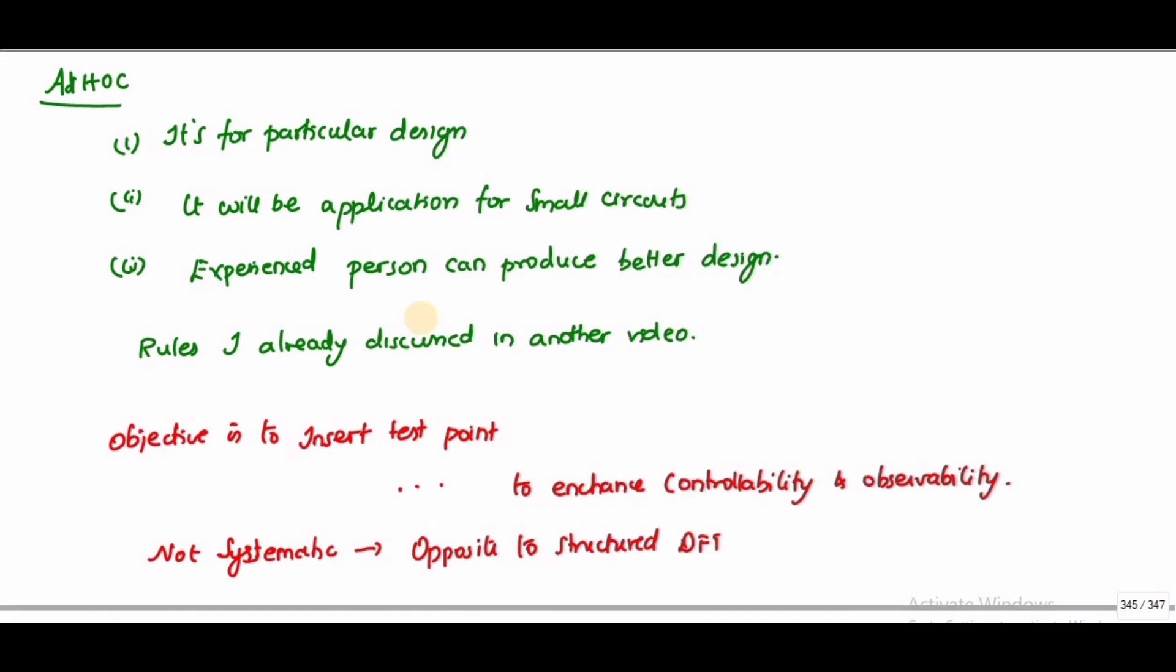If one test vector is able to find only a single fault, the number of input patterns also has to be very high. We need to make sure that the test pattern we are giving will try to cover 95 to 99 percent of faults.